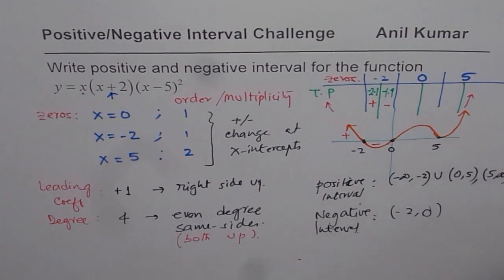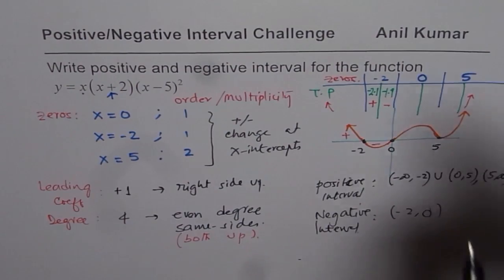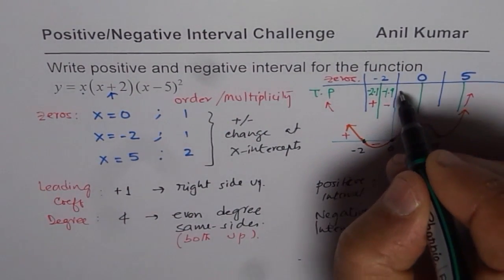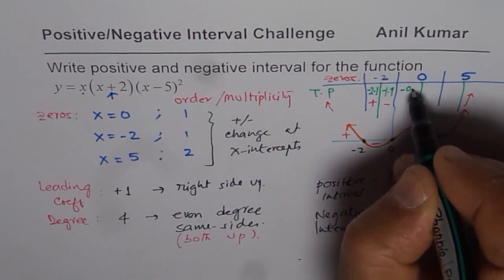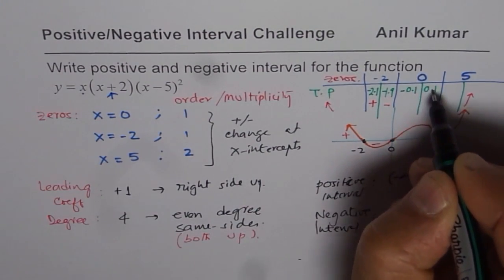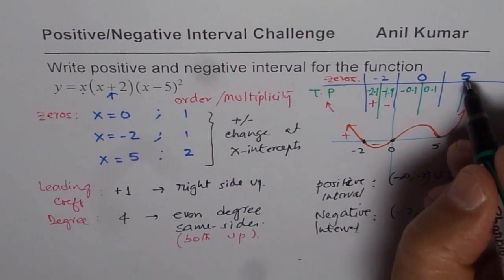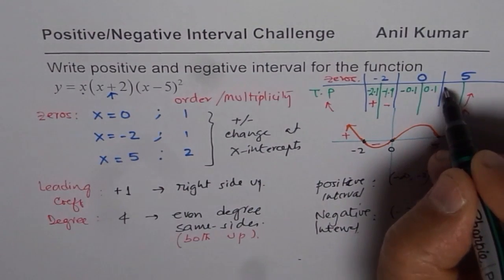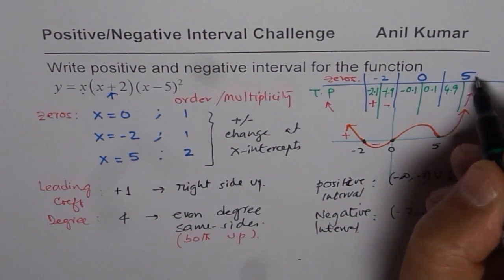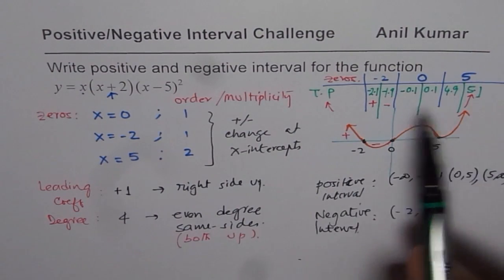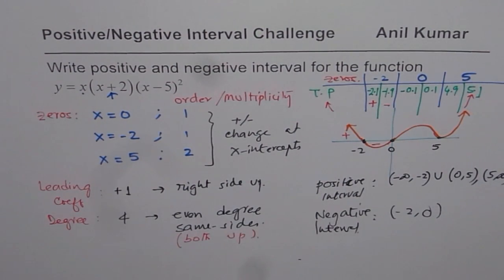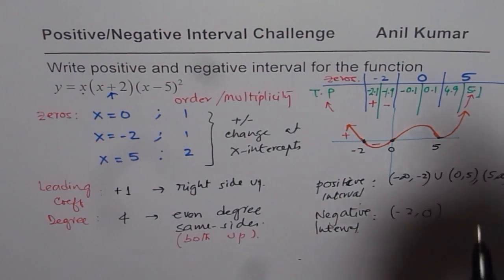So you could continue by calculating the values. So less than 0 could be minus 0.1 and 0.1 positive will be on the right side. So on the left side of 5, you could say 4.9. On the right side, it will be 5.1. You could evaluate with these values in. Plus and minus signs, which now we know,